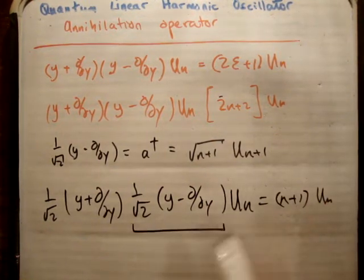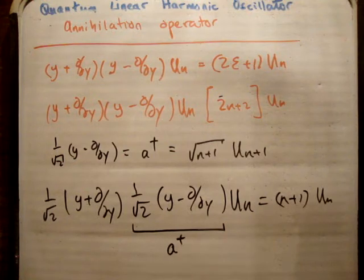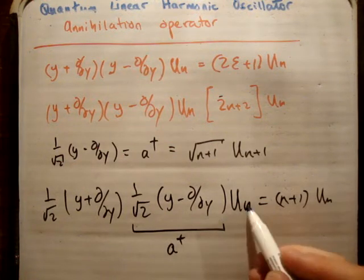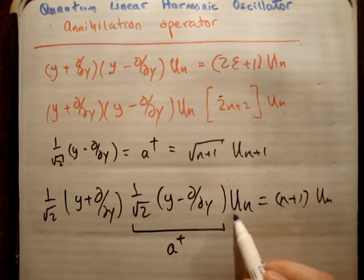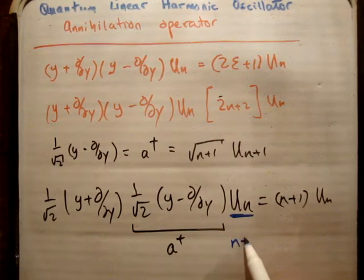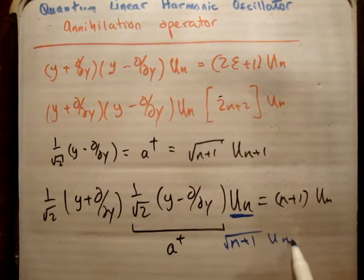But this here, we know, is our creation operator A-plus. So what does A-plus do? Well, A-plus makes, it becomes, because we're acting on UN, it's going to get root n plus 1, UN plus 1.